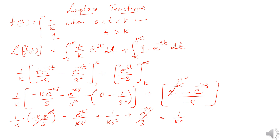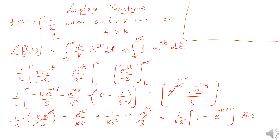What we are left with is 1 over k s squared times the quantity 1 minus e to the power negative ks. So the Laplace transform of this piecewise function is equal to 1 over k s squared, times 1 minus e to the power negative ks. This is all for now — we've learned how to find the Laplace transform of a piecewise function. Thank you.